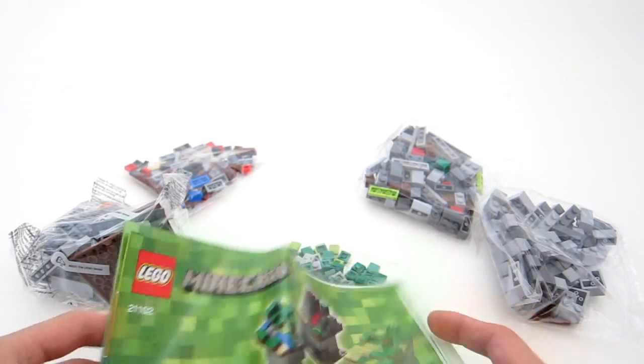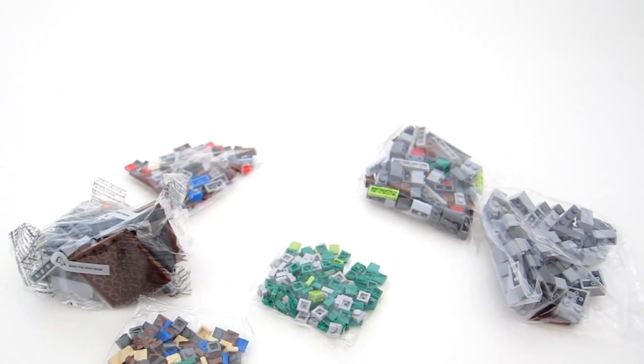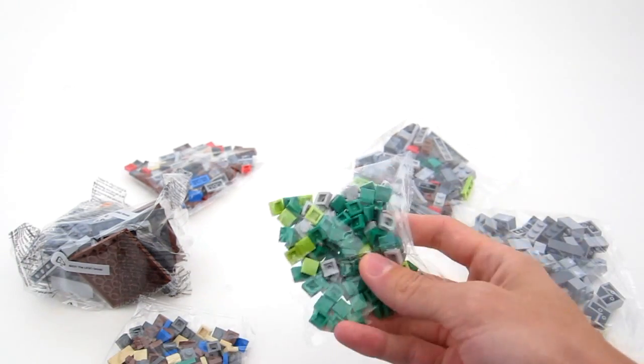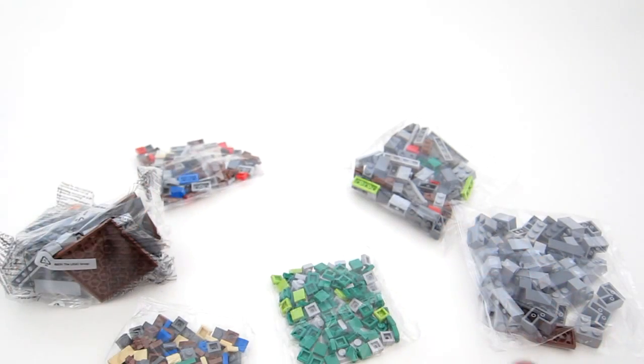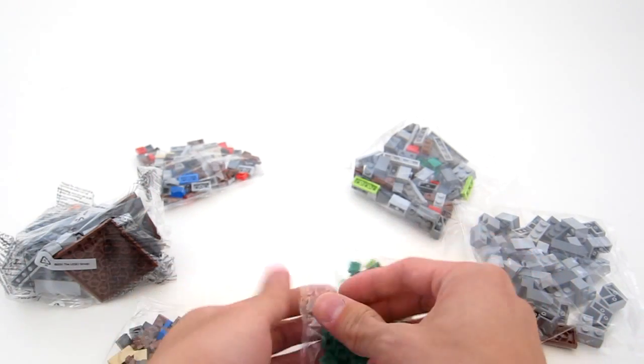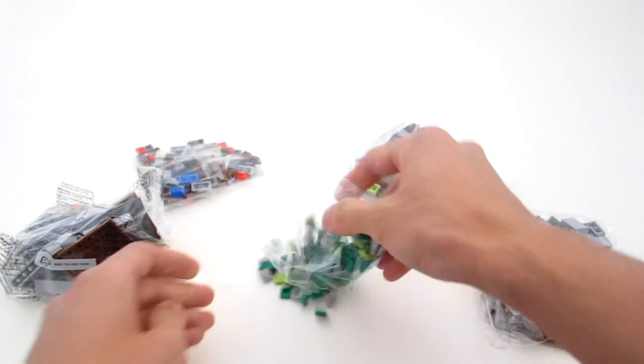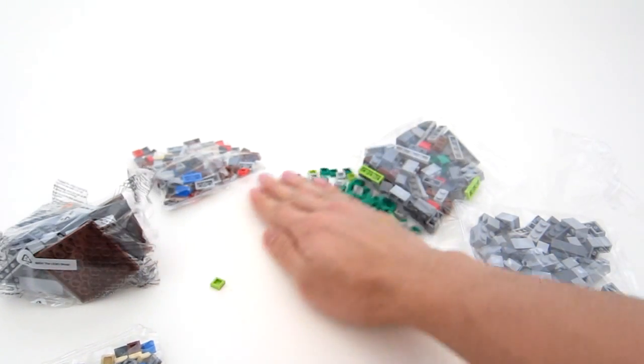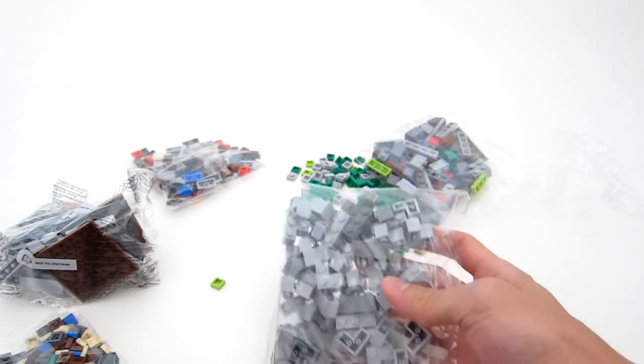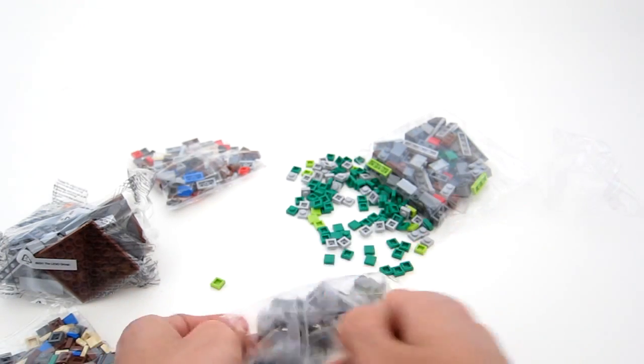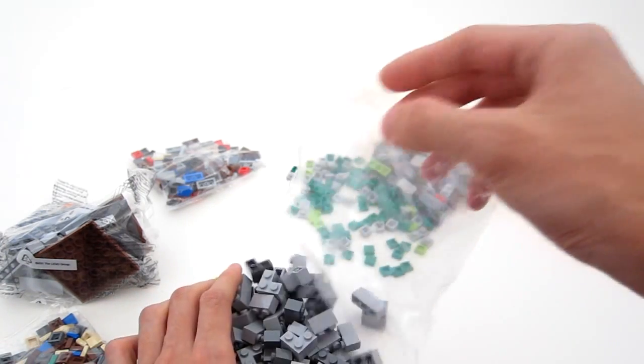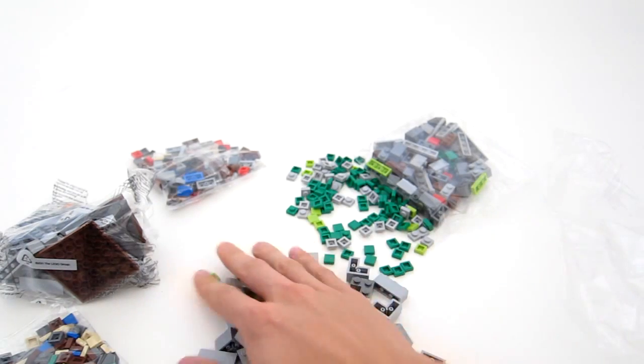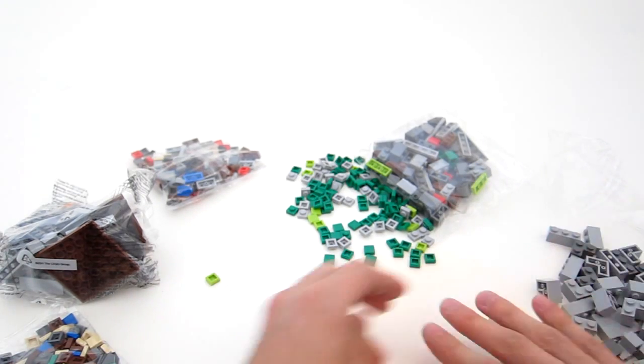And let's take a look at the parts first because that's what I'm most interested in. So a lot of people have noticed that this set has a ton of green tiles which is nice. Lots of small pieces. Some basic bricks here. Nothing too new. You can get those easily from BrickLink in bulk.